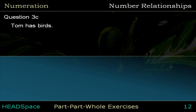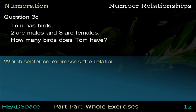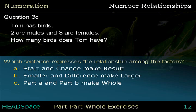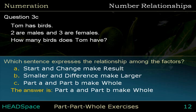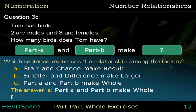Question 3c. Tom has birds. 2 are males and 3 are females. How many birds does Tom have? Which sentence expresses the relationship among the factors? The answer is: Part A and Part B make the whole. Whole is unknown.